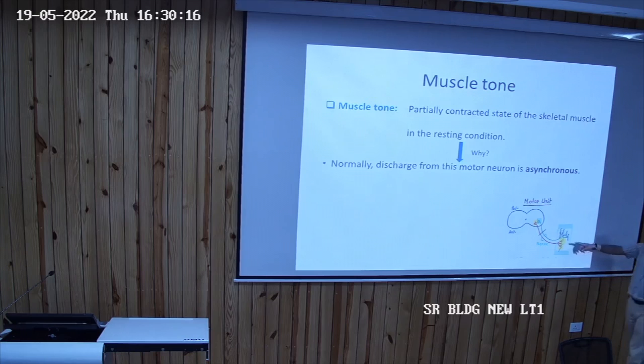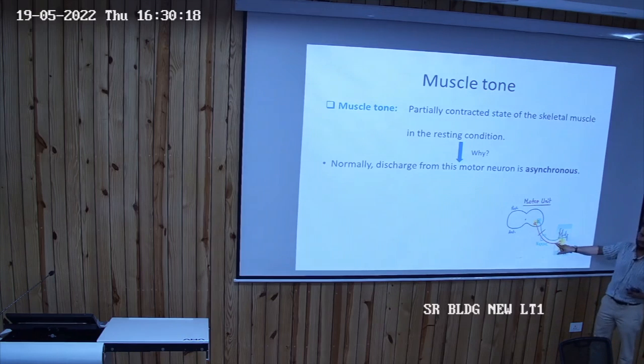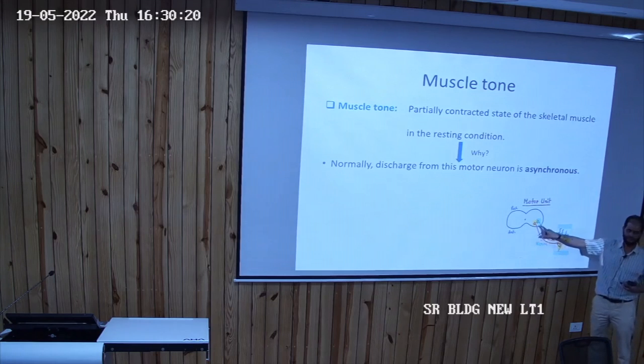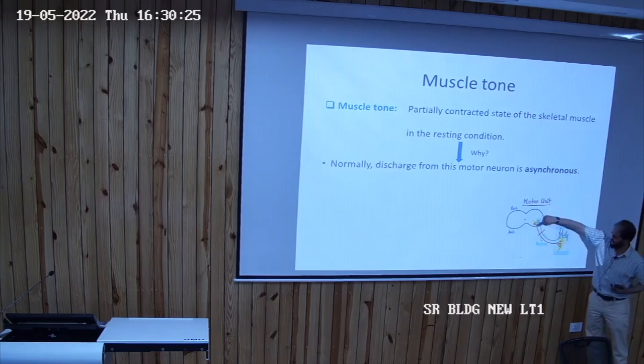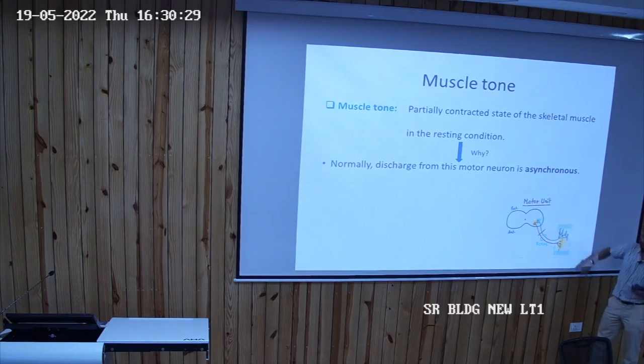What are the motor fibers? Alpha and gamma. Gamma motor neurons. So you know the motor units, red muscles are supplying three fibers suppose. This is supplying four fibers of the muscle fiber.